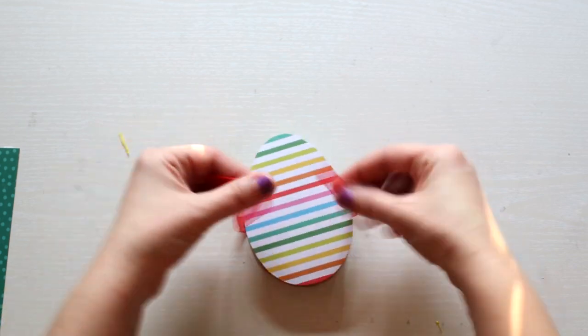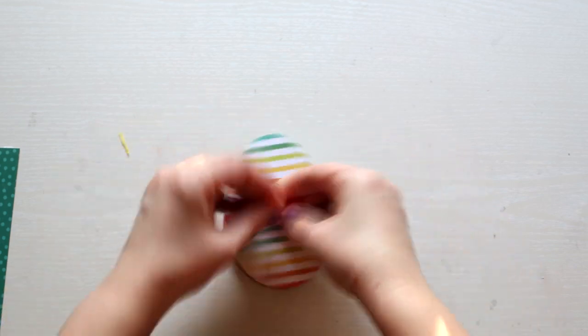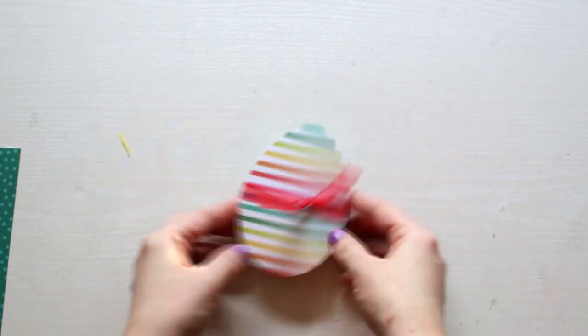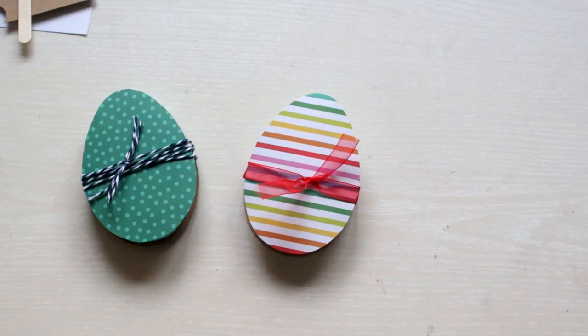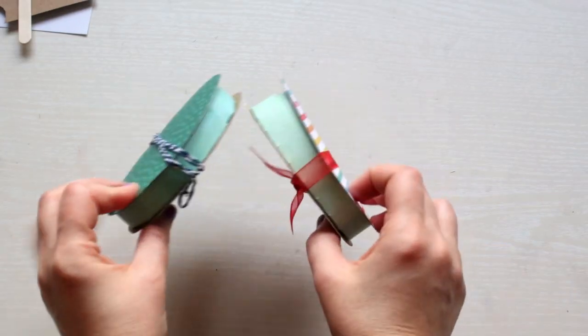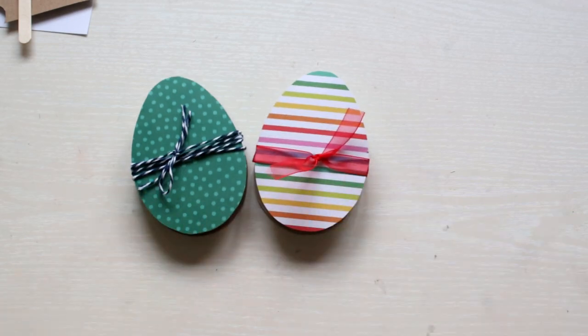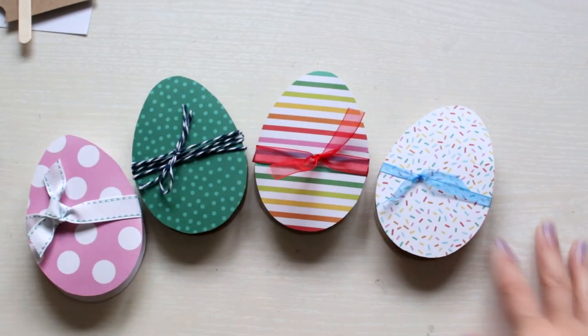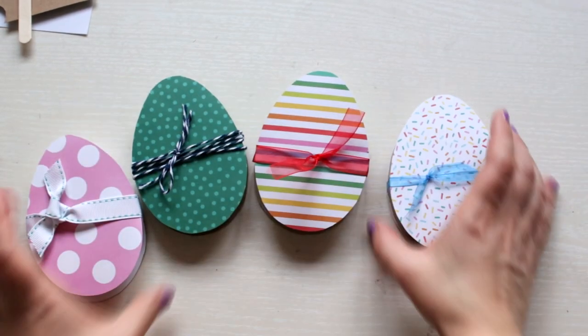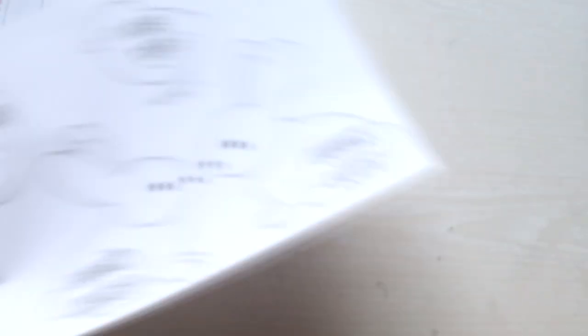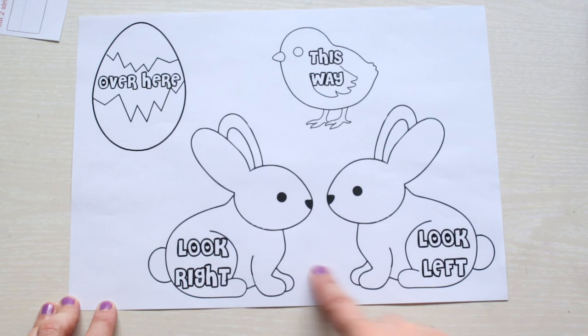Then close the box and tie a bow around it. These are the boxes I made so far. They're quite easy to make and it doesn't take you too much time. And if you print my template it's even faster. Now let me show you what else you can do for the egg hunt.